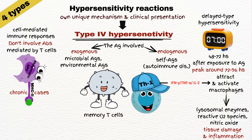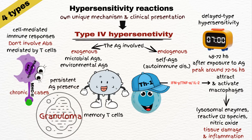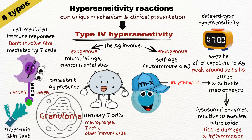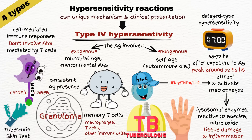In chronic cases, persistent antigen presence can lead to the formation of granulomas, which are organized collections of macrophages, T-cells, and other immune cells attempting to contain the antigen. Examples include the tuberculin skin test (Mantoux test), where injection of purified protein derivative from Mycobacterium tuberculosis elicits a local delayed-type hypersensitivity response in sensitized individuals, causing a palpable induration. Another example is chronic infections like tuberculosis and leprosy, where persistent intracellular pathogens lead to continuous T-cell activation, chronic inflammation, and granuloma formation.